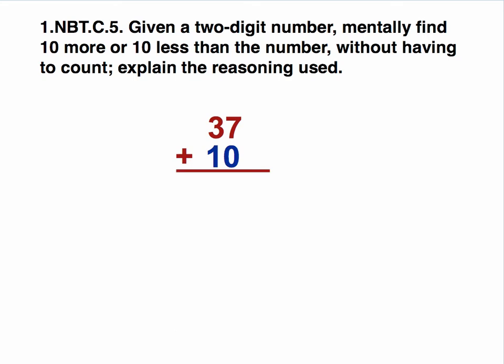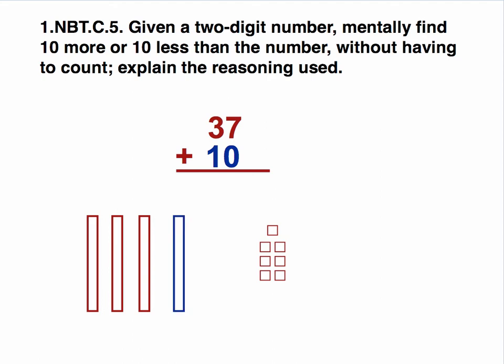So what else can we do mentally? Well, let's say we start with 37 and we're going to add 10. Students have worked with manipulatives dealing with 10s and 1s. So if they can visualize that here I would have 3 tens and 7 ones. And if I'm adding 10, I would throw in an additional 10. So now I have 4 tens and 7 ones, which would be 47.